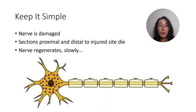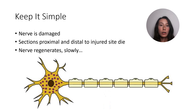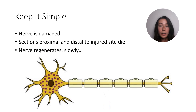So your nerve gets damaged. It could have been from a fall, a traction injury, someone got shot or stabbed — it doesn't matter. Just know that the nerve is injured. This process only occurs if the axon of the nerve is injured.